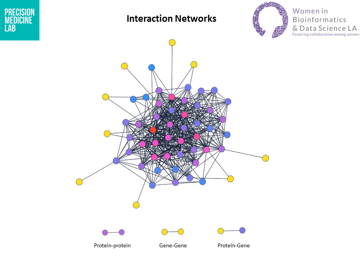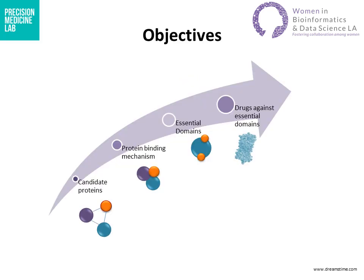Interaction networks are basically a good way to represent different kinds of interactions taking place among biological entities, or can show us the relation among different biological molecules. In this study, we wanted to identify and study the binding mechanism of head and neck cancer key genes, also to find essential domains involved in vital interactions, ultimately finding out the available drugs against these domains.